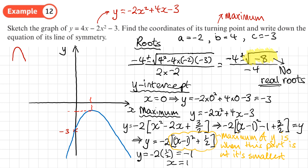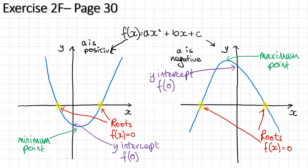So the maximum point has coordinates (1, -1). Mark x = 1 and y = -1 on the diagram. Always check consistency: x is positive and y is negative, which matches the diagram. You should now be able to do Exercise 2F on page 30 of the textbook.